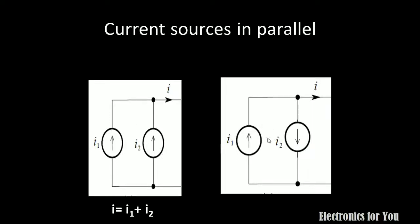Another combination may be where the current sources are connected in parallel but have opposite directions. In that case the resultant current will be I equals I1 minus I2, or it can be I2 minus I1 — whichever current is greater will determine the resultant current.